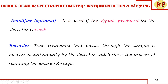An amplifier is optional — if the signal from the detector is strong, an amplifier is not required; if it is weak, an amplifier is needed to enhance the signal. In the recorder, each frequency that passes through the sample is measured individually by the detector, and this process is very slow because it scans the complete IR range.